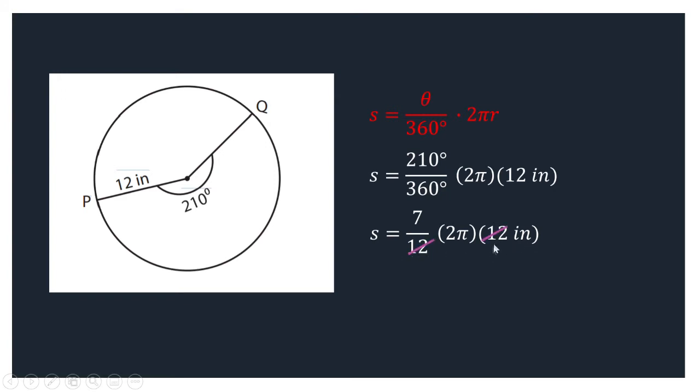We can cancel this, and we can have 7 times 2 pi, that would give you 14 pi inches. Or we can multiply 14 by 3.14 as the approximate value of pi, and that would give you 43.98 inches.